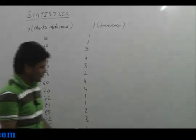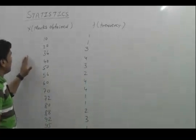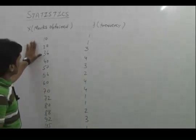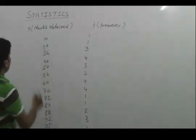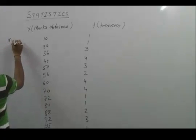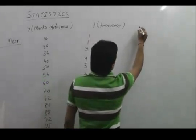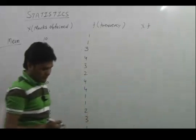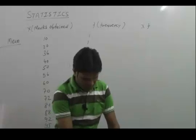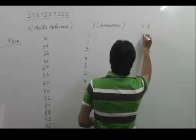Now, in this particular case, how we can find out the mean of this ungrouped data? First, we need to find out X multiplied by F, that is Fx. So this would be, if you multiply that, 10 into 1, 10, 20 into 1, 20.